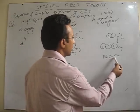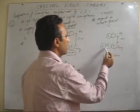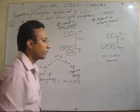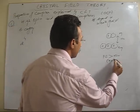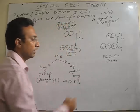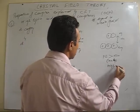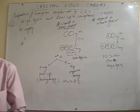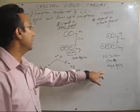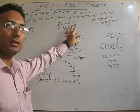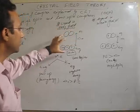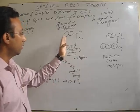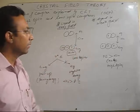In this case, pairing energy is greater than delta naught because this gap is very less. So electron can go to EG and as a result, number of unpaired electrons in this case are 4. So that means this is the case of high spin, and here it is a low spin complex. So it all depends on the nature of the ligand and other factors which influence the value of delta naught. Those can decide whether this type of arrangement will be there or this type of arrangement. So it depends on the factor that pairing energy is more or less than splitting energy and vice versa.